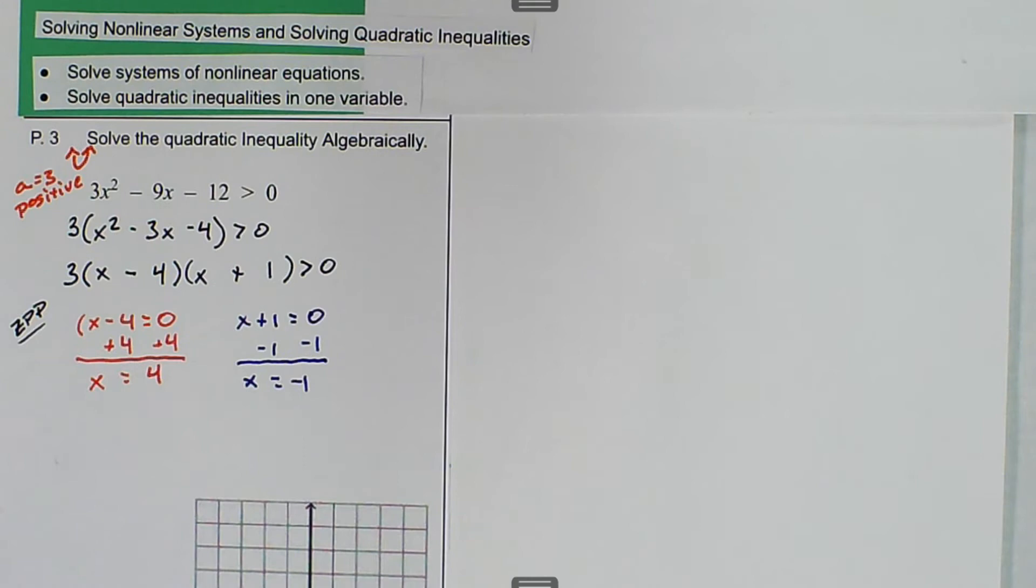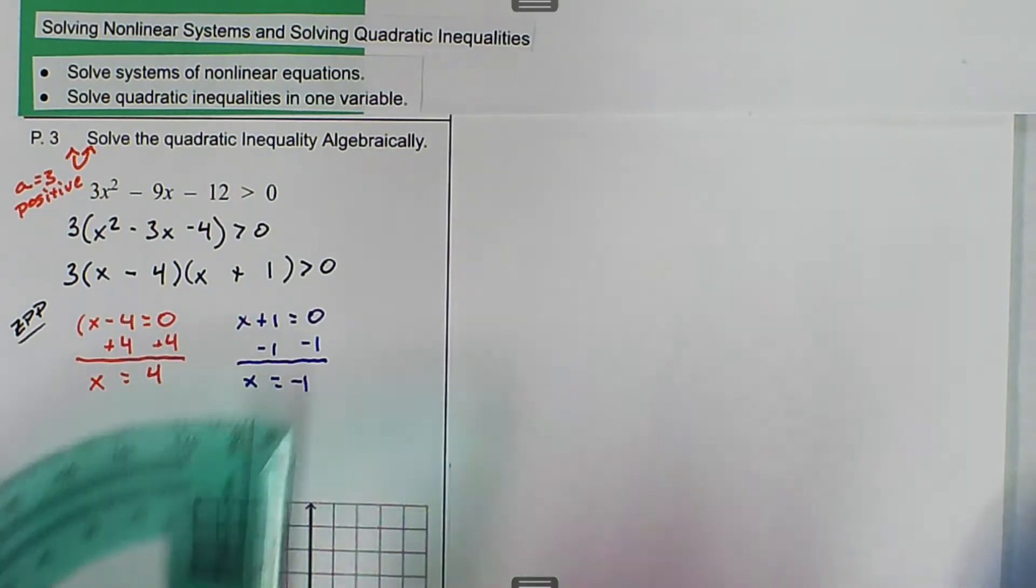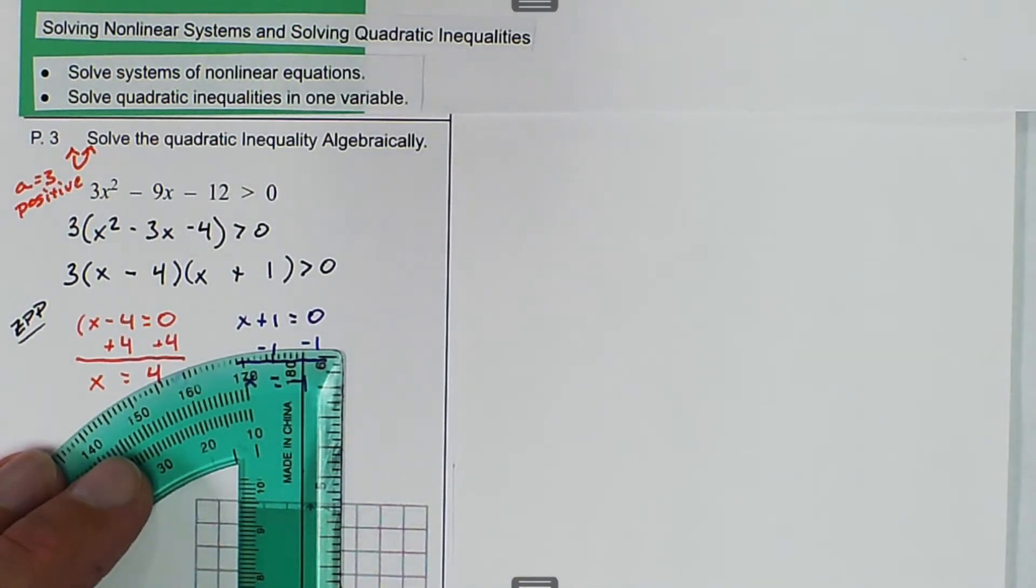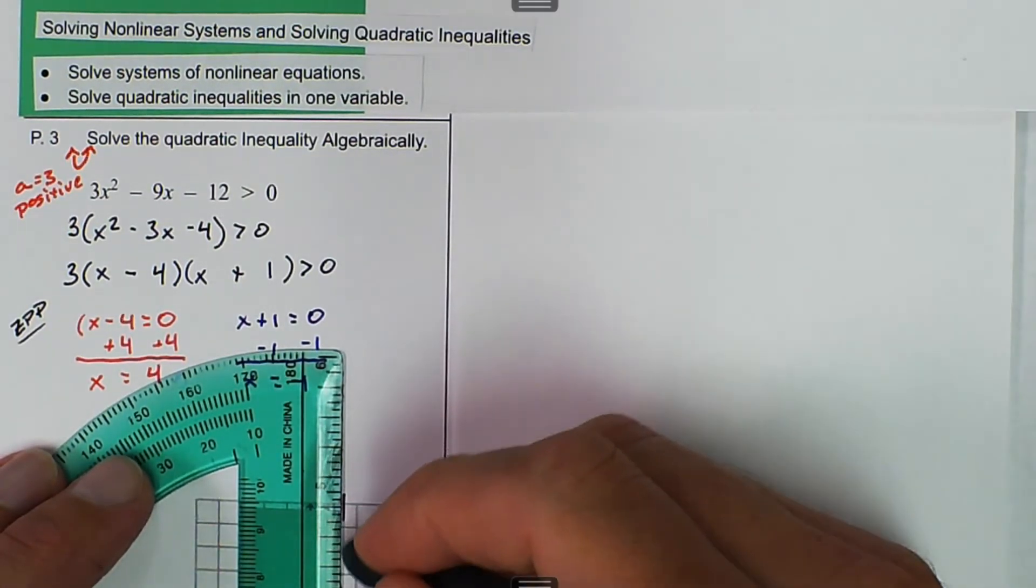We like to keep it in the middle or keep the vertex on the axis of symmetry. So if this is 1, 2, 3, 4, 5, 5 divided by 2 is 2 1/2. So 1, 2, 2 1/2 is right there. So we're still going to have our axis of symmetry, which is in the middle of our two zeros.